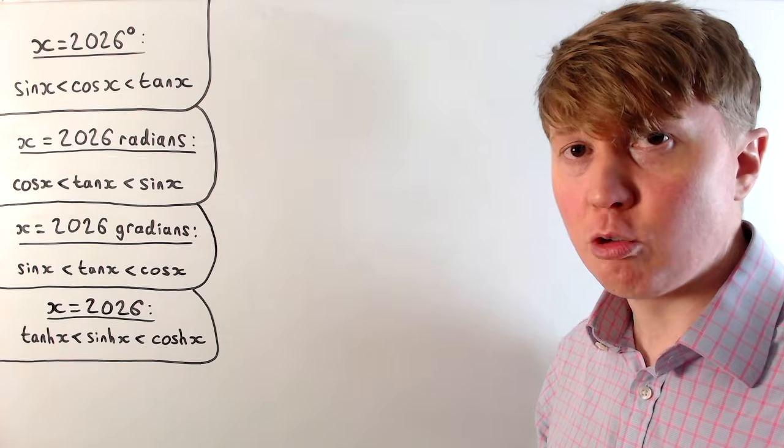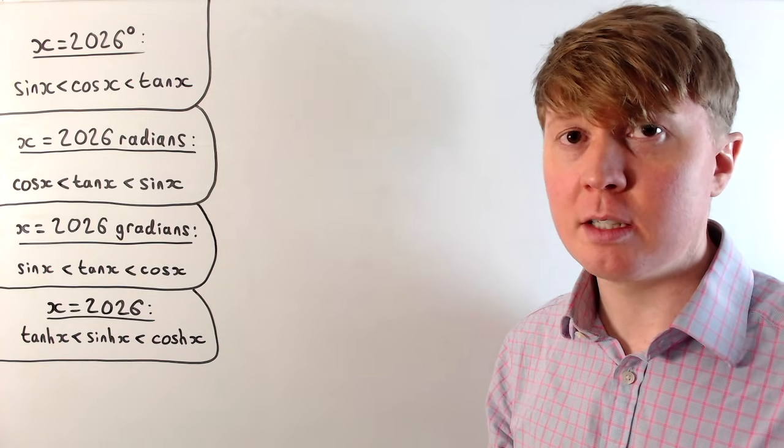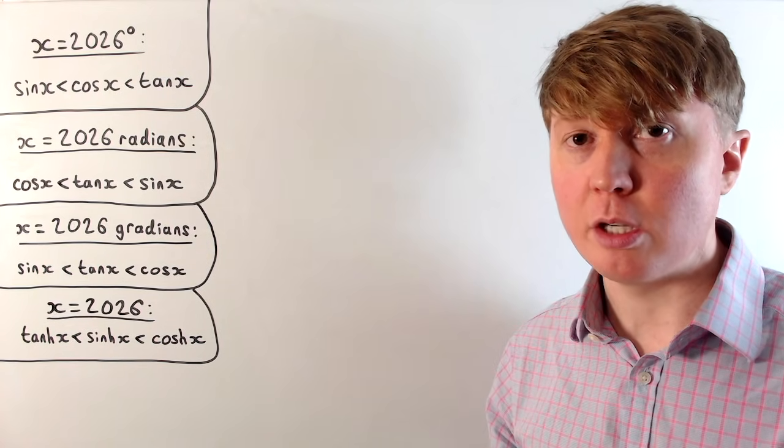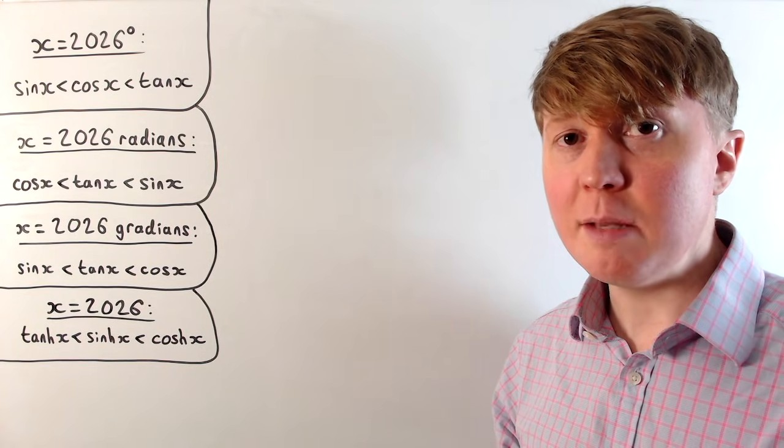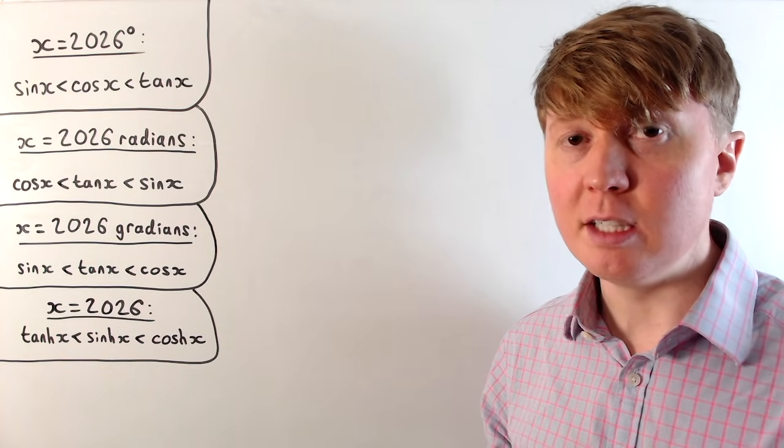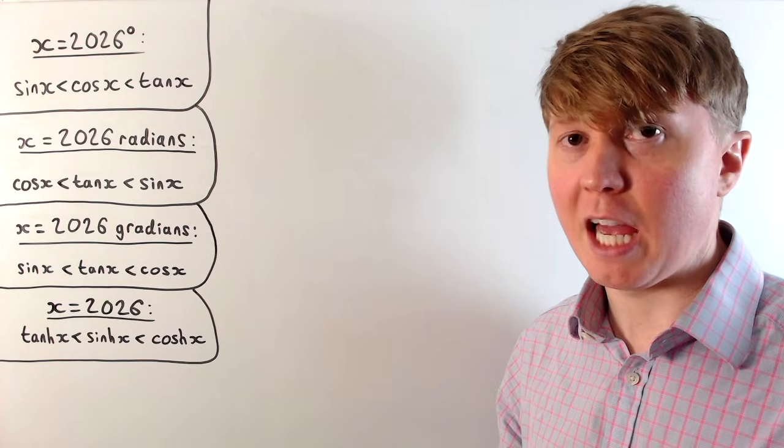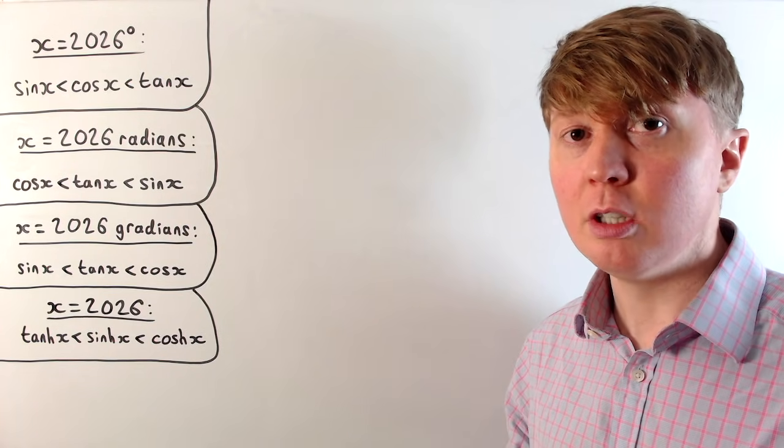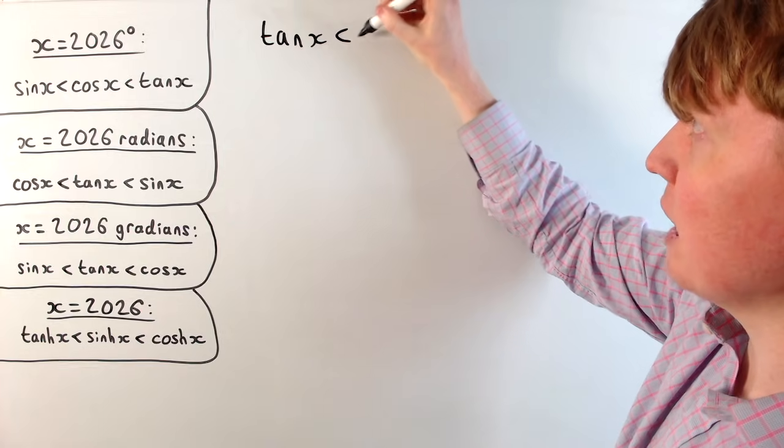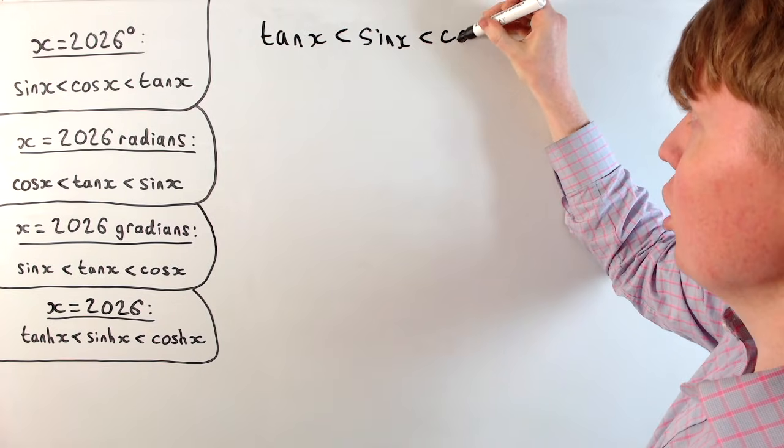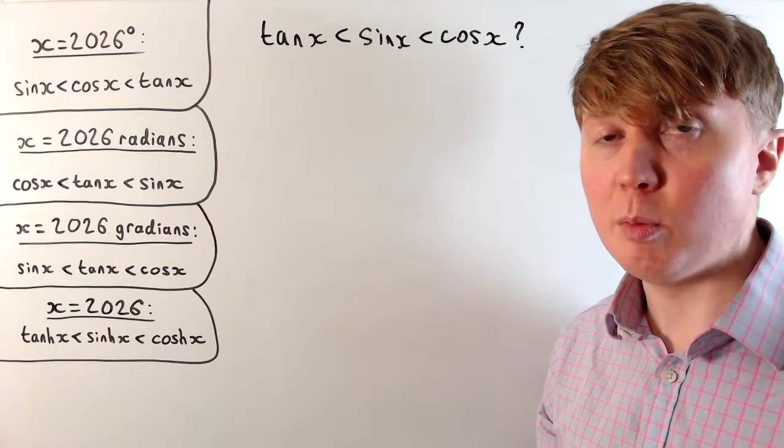If we consider the hyperbolic trig functions, we have hyperbolic tan less than hyperbolic sine less than hyperbolic cos of 2026. And you'll notice here we don't actually have any units, because with the hyperbolic trig functions, there isn't really a sense of an angle being in degrees or radians. And it turns out that this inequality is actually true for all positive values of x. So what I think makes this quite interesting is we could also aim for tan x less than sin x less than cos x, because then if this is achieved in degrees, radians, and gradians, this will also be satisfied with hyperbolic trig functions.